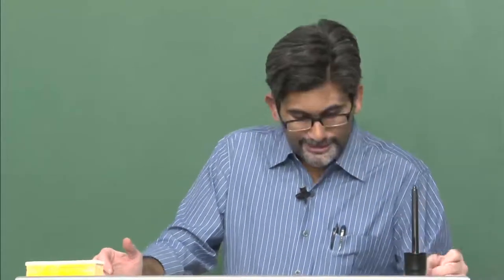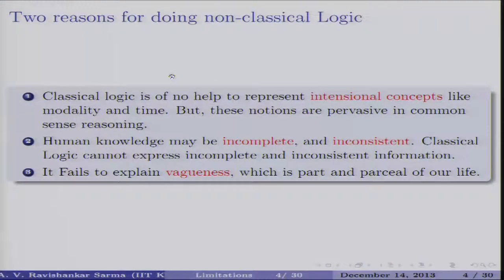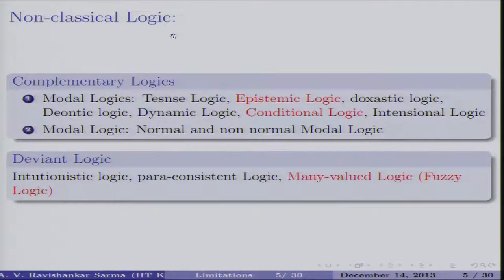Classical logic is a starting point used for capturing mathematical reasoning. It also fails to explain concepts related to vagueness, which is part and parcel of our everyday life. We constantly use vague expressions — English language consists of vague predicates such as tall, rich, poor, etc. Judgments and inferences based on these things are based on our observations rather than the principles of formal logic.